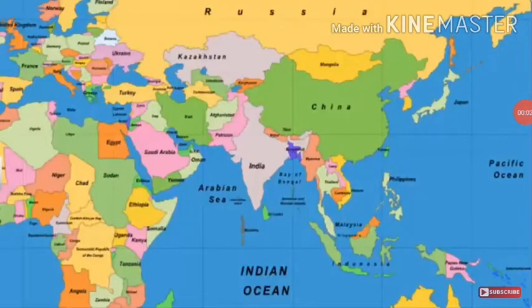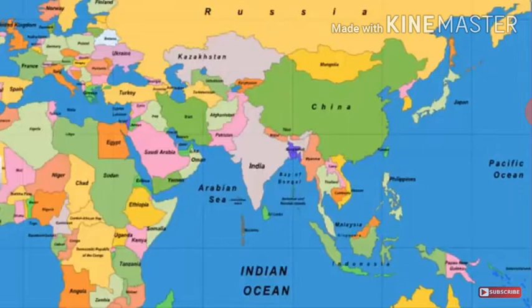India held an important position in the ancient world and had trade relations with many countries. One of the famous land routes was connected to the famous Silk Route of China. These routes contributed to the exchange of ideas and commodities since ancient times. The ideas of the Upanishads and the Ramayana, the stories of Panchatantra, Indian numerals and the decimal system could thus reach many parts of the world. Spices, muslin — fine cotton — and other merchandise were taken from India to different countries.